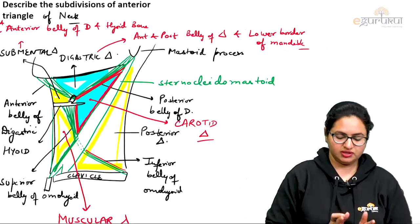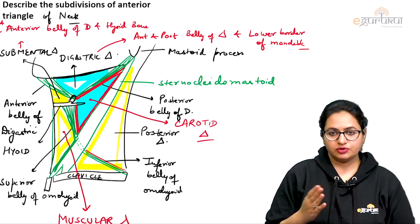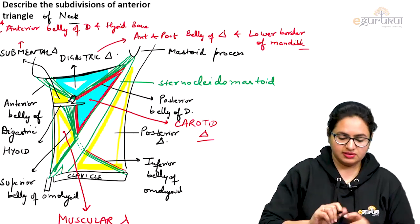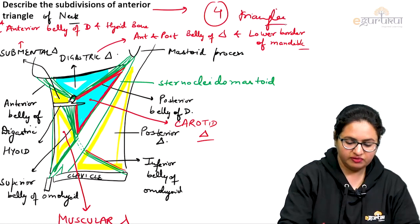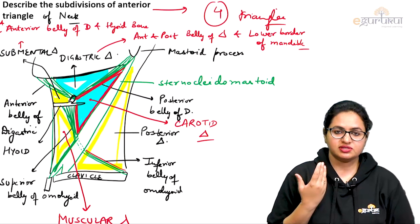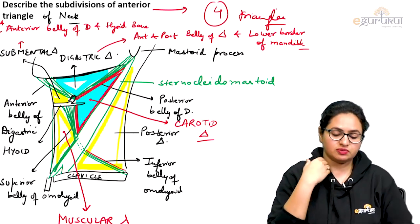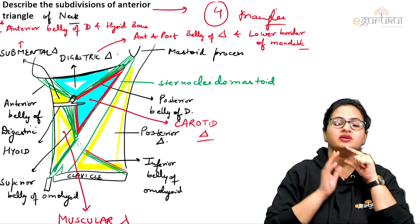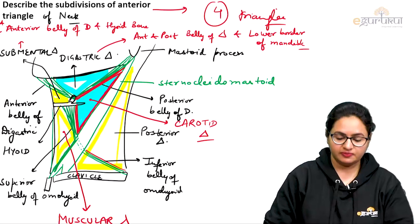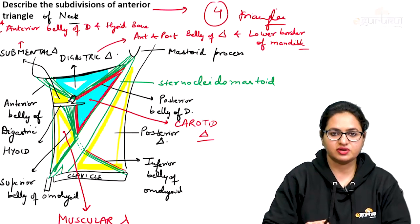This shows all the divisions of the anterior triangle. The anterior triangle is further divided into 4 triangles. When we say how many triangles can be visualized on the lateral side, only 3 and a half triangles are visible from the lateral aspect, because the submental triangle — only half of it is visible from the lateral side. This is regarding the subdivisions of the anterior triangle.